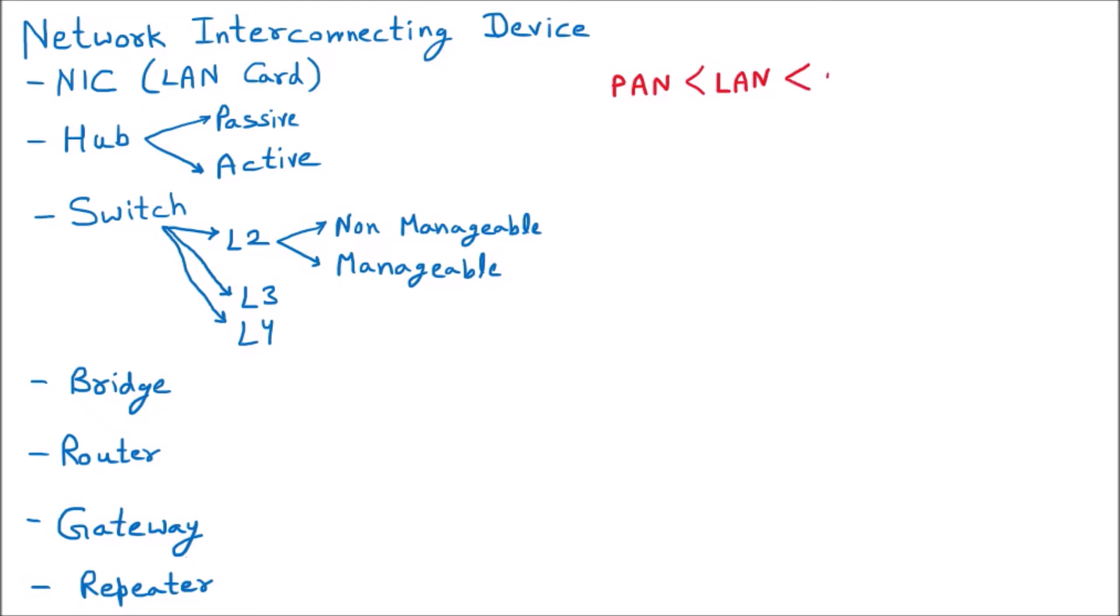Then further we are having the Metropolitan Area Network, MAN. MAN and LAN both are the same in terms of the configuration and devices, but the distance is more. LAN is having the distance of up to 10 kilometers, and MAN is having more distance, up to one complete city.